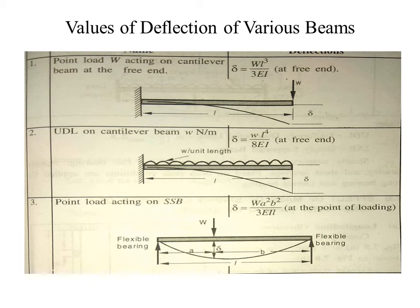For a simply supported beam — SSB — when an eccentric point load acts, the deflection equation is: delta equals W times a squared times b squared divided by 3EI times L, where I is the moment of inertia, L is the total length, a and b are the distances from each support to the load point, and W is the point load.